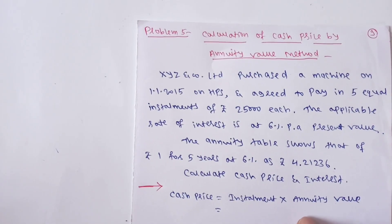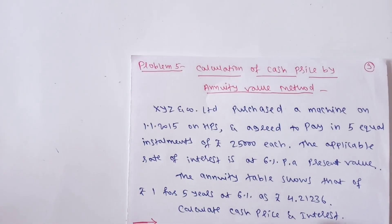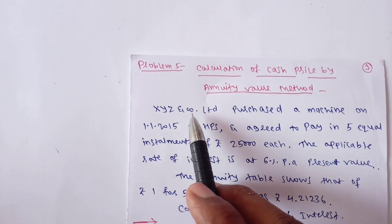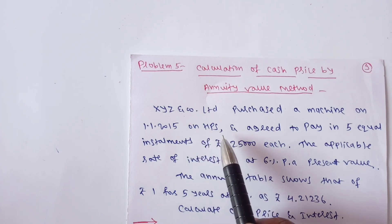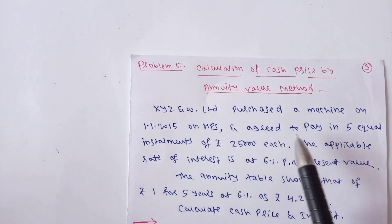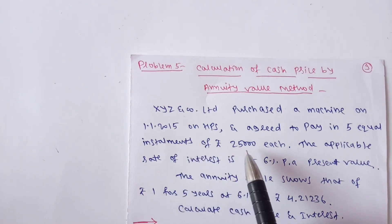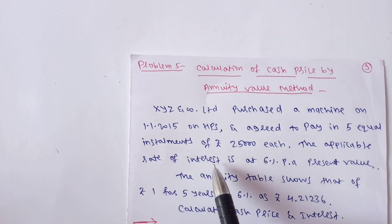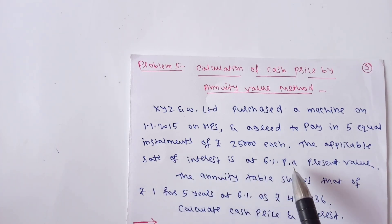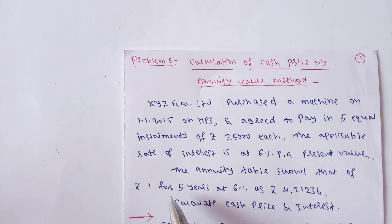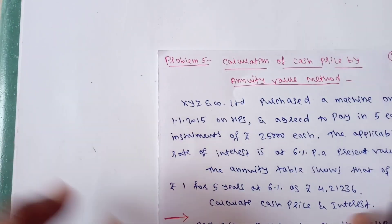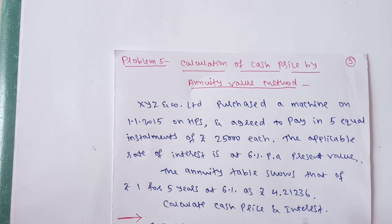The problem which I have selected: XYZ and Company Limited purchased a machine on 1-1-2015 on a hire purchase system and agreed to pay in 5 equal installments of Rs.25,000 each. The applicable rate of interest is 6% per annum. The annuity table shows the present value of Rs.1 for 5 years at 6% as 4.21236. They have asked to calculate cash price as well as interest.